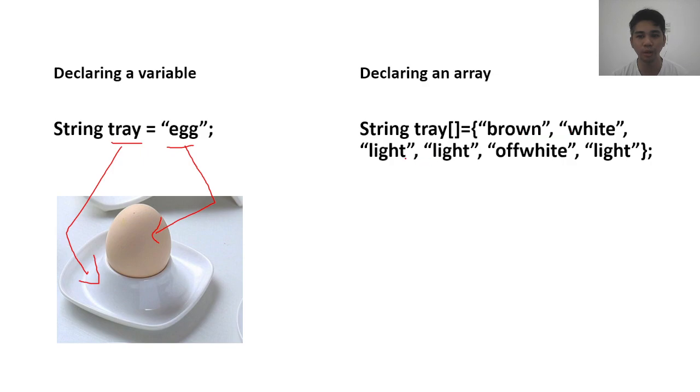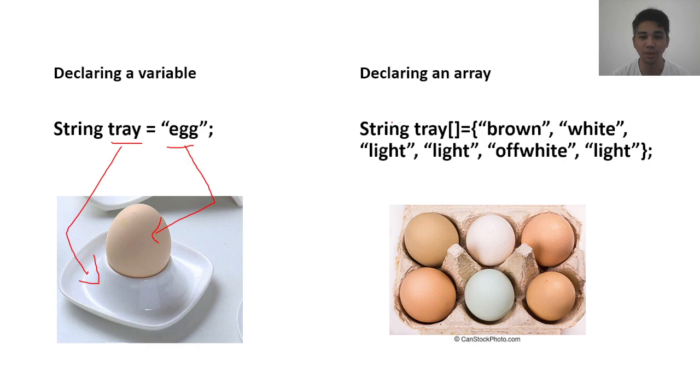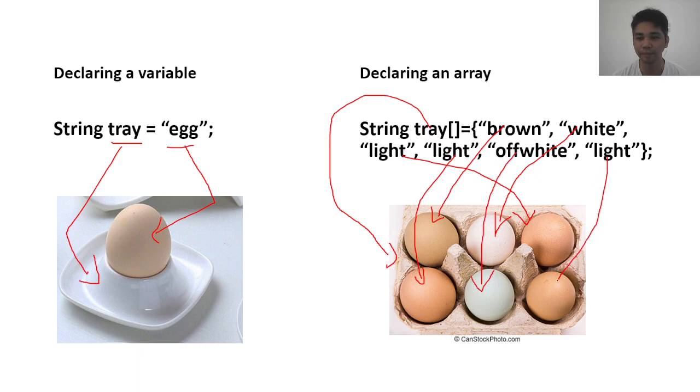So there are how many? One, two, three, four, five, six different values. So it looks something like this in an analogy. So you have your tray, and then you have the different values inside that tray. So as clear as day, an array may contain different kinds of values compared to a normal variable wherein it can only contain one value.